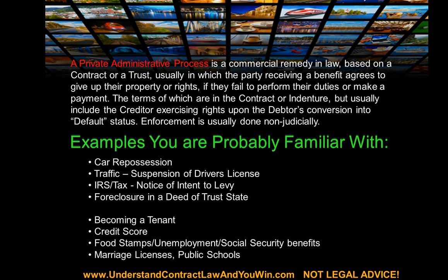Here are some examples of a private administrative process — one where there is no court, no third-party arbitration. The first example is car repossession. When you fall behind on your monthly car payments, the agreement you signed with the bank gave them the right to repossess and take the car if you fell behind. They did not need to go to court or file anything with any court or get a judge to sign anything.